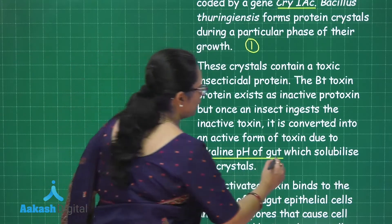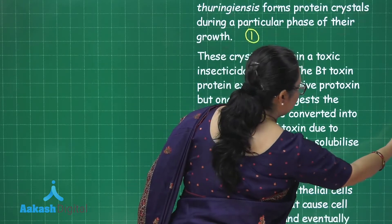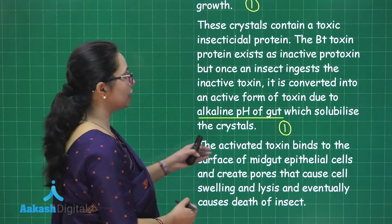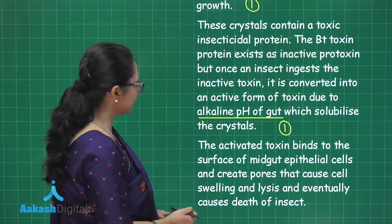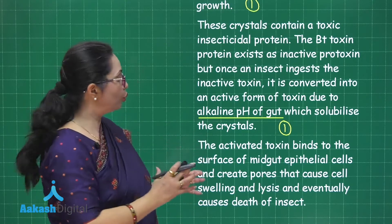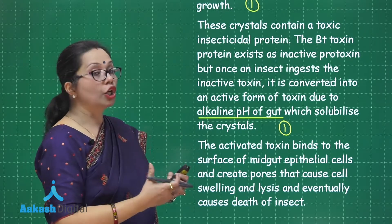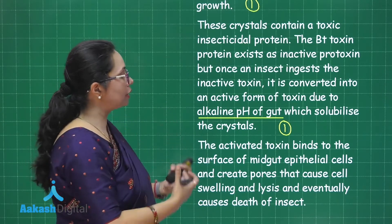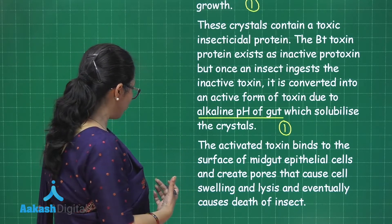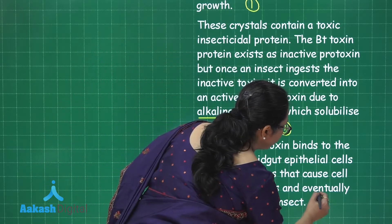This activated toxin binds to the surface of the midgut epithelial cells and creates pores there, causing the cells to swell up and undergo lysis. Eventually the insect dies due to the damage inside the gut caused by cell lysis. This part is worth one mark.